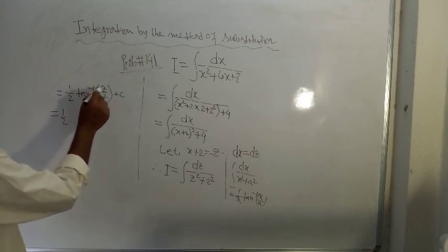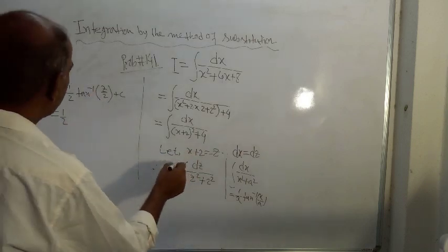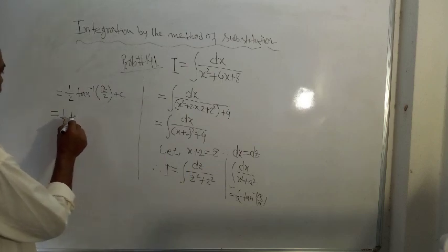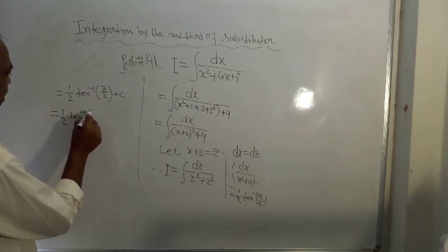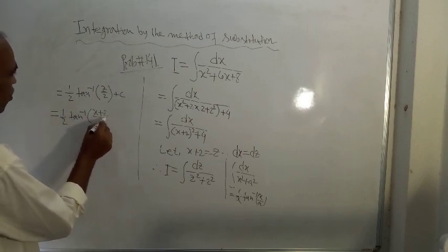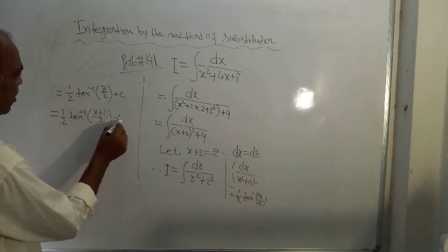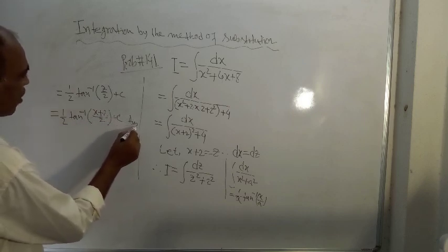So this is equal to, now write z in terms of x which is equal to x plus 2. So half tan inverse x plus 2 by 2 plus c. This is the answer to the given problem.